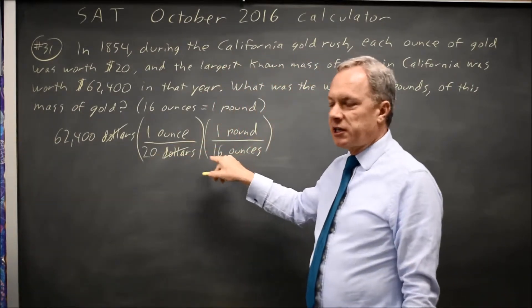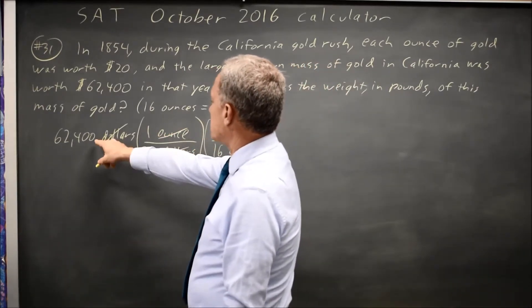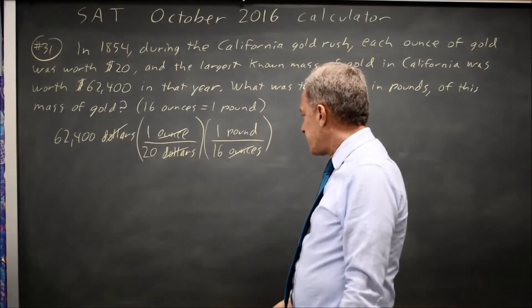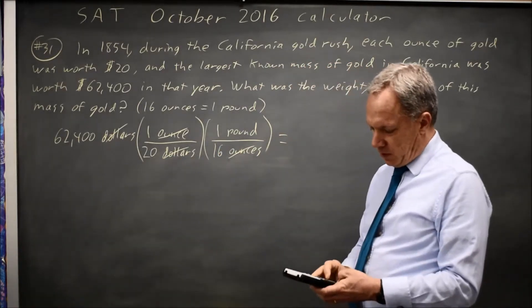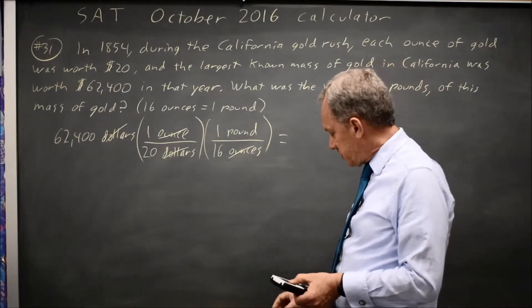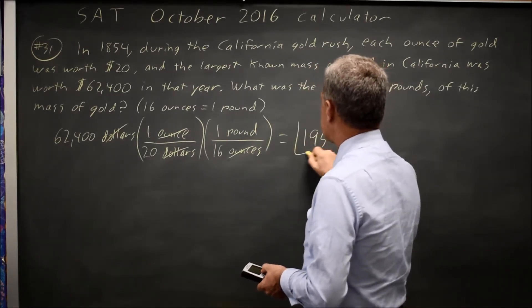I put ounces in the denominator to cancel ounces in the numerator, and now if I take 62,400 divided by 20 and then divide that answer by 16... 62,400 over 20 is 3,120, and divided by 16 I get 195 pounds of gold.